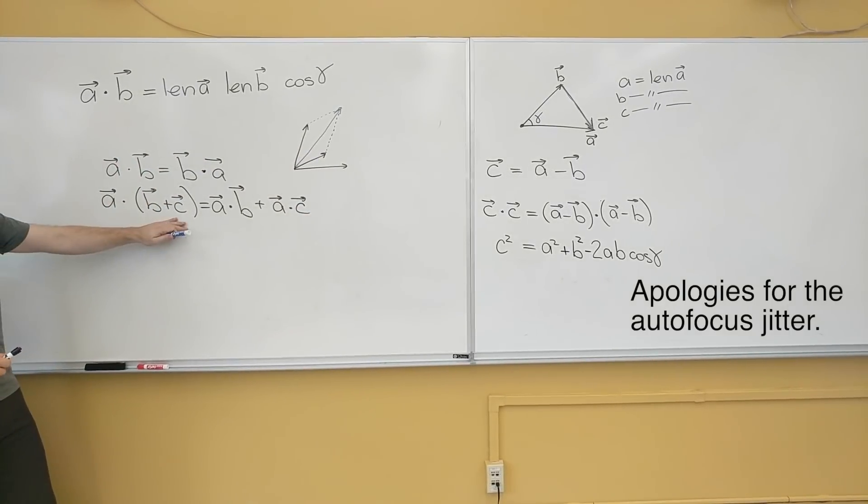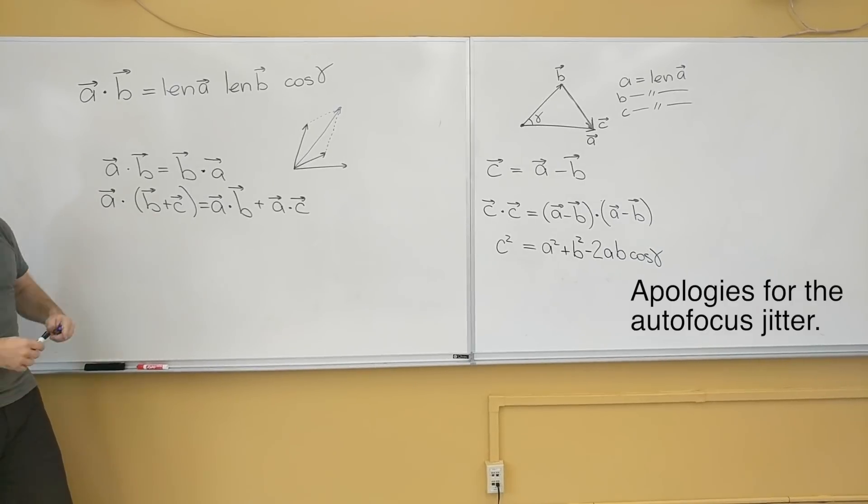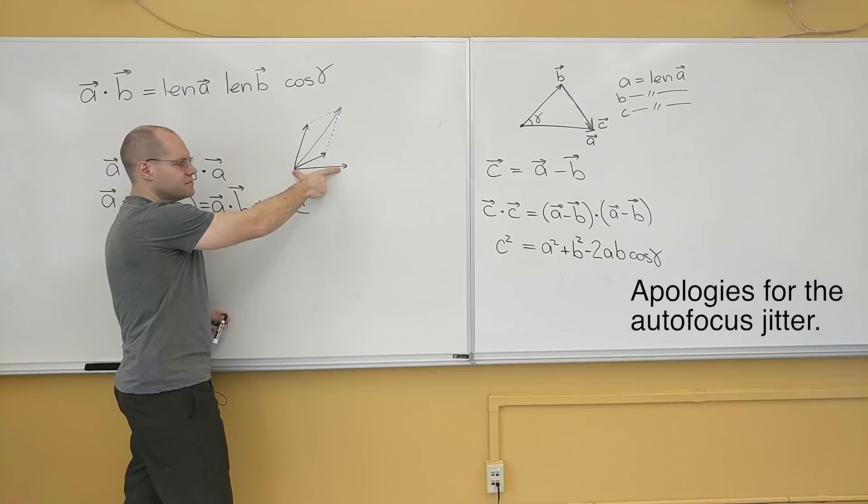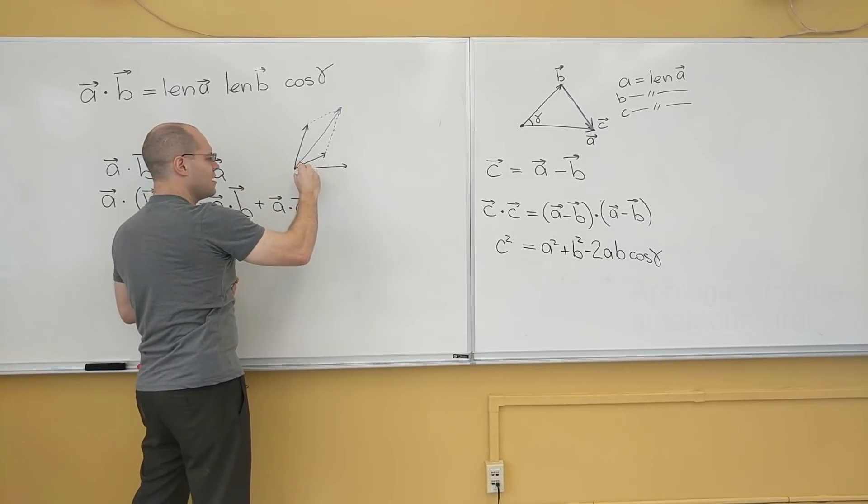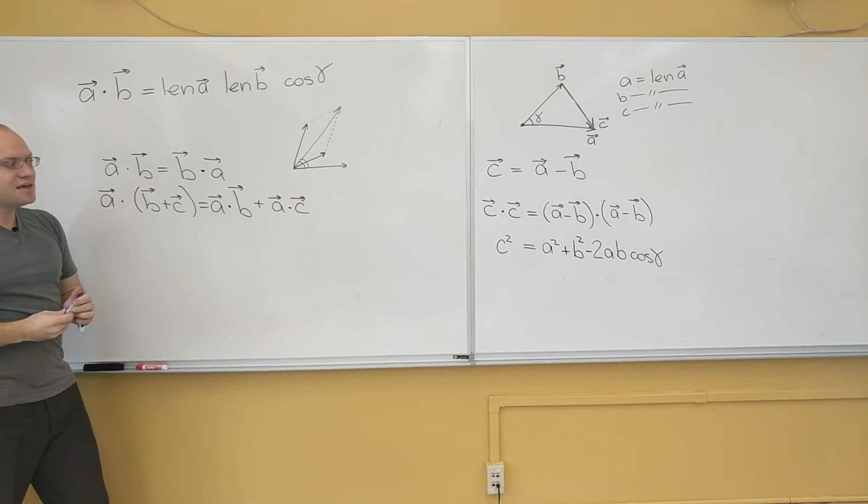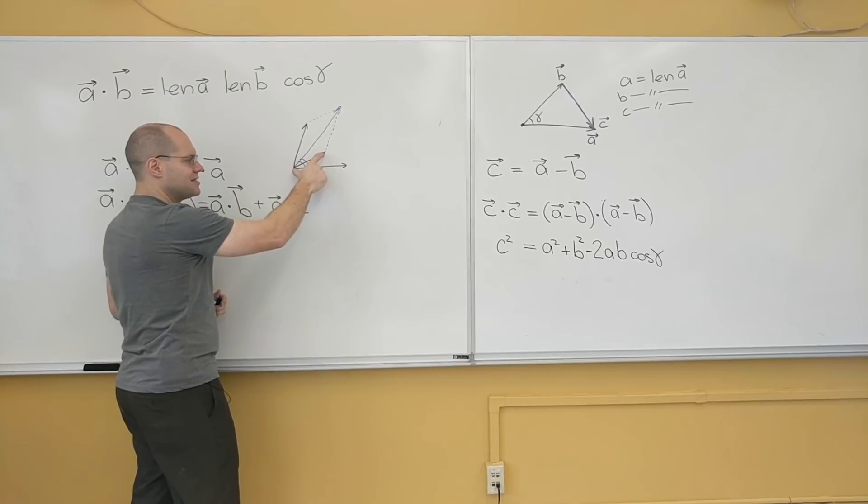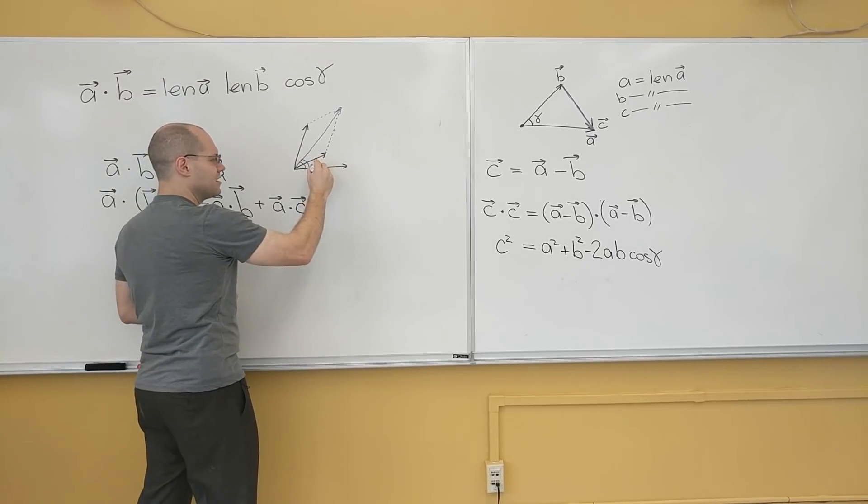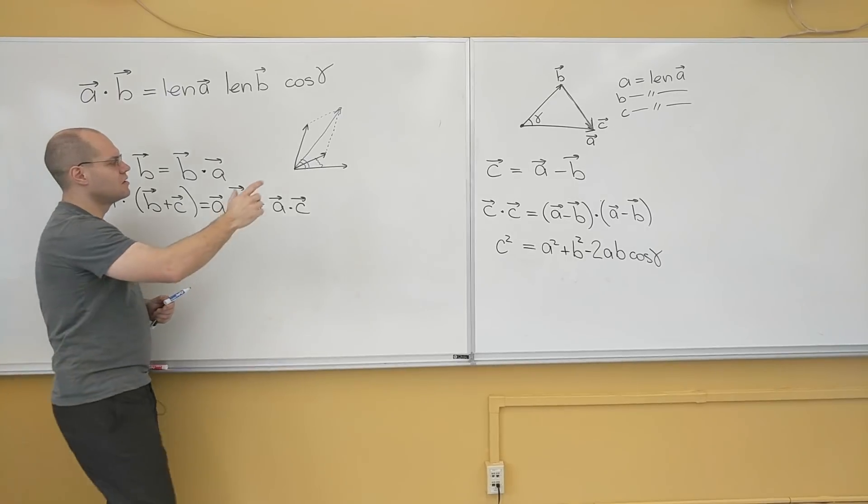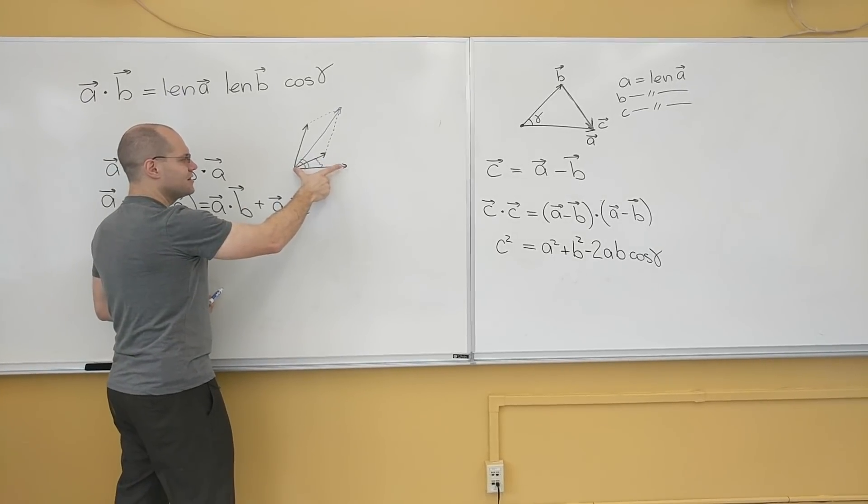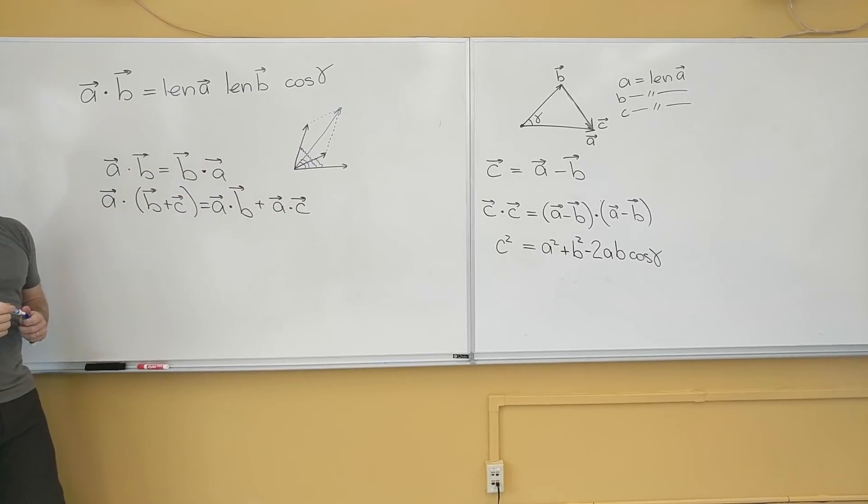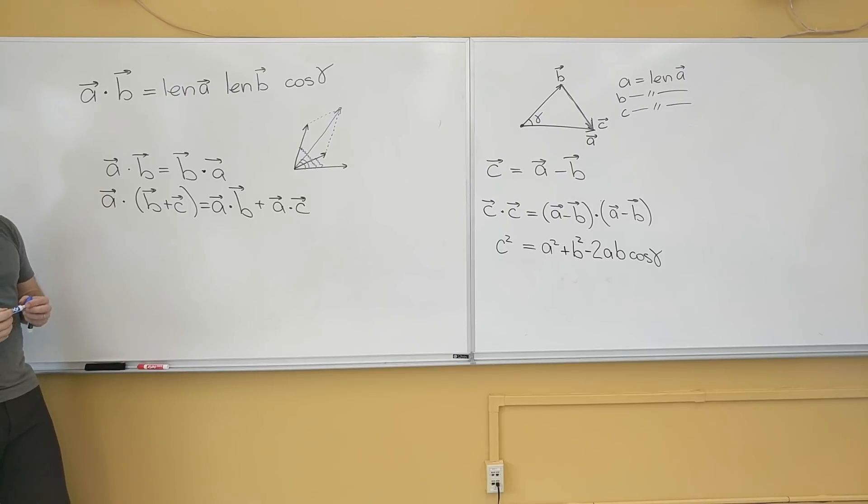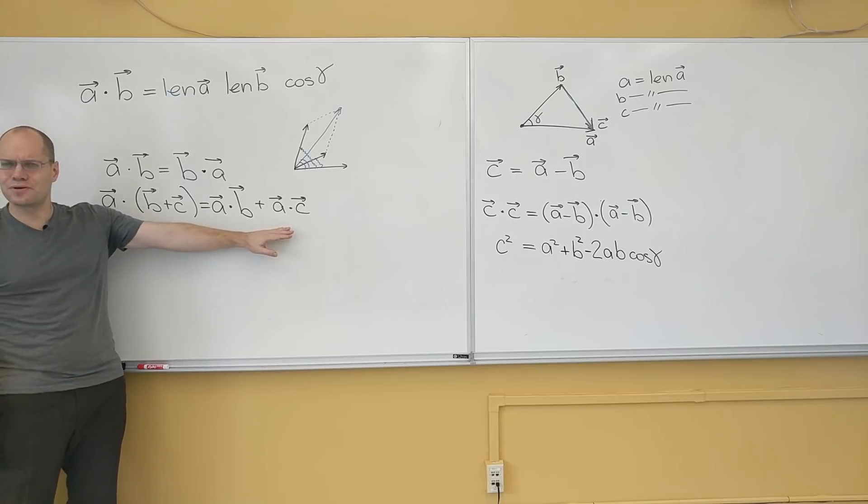So what this is saying is that when we dot a with b plus c, the length of a times the length of b plus c times the cosine of the angle between them equals the length of a times the length of b times the cosine of the angle between them plus the length of a times the length of c times the cosine of the angle between them. That's a mess.